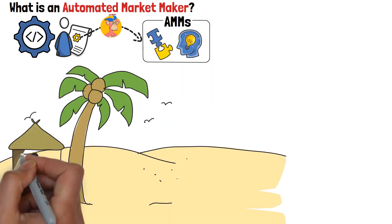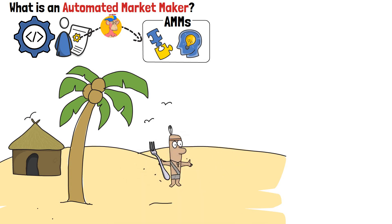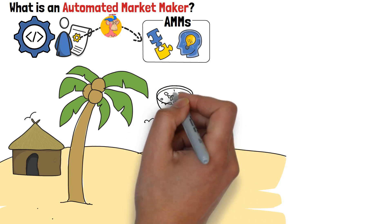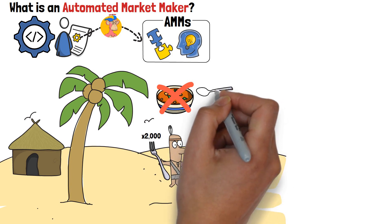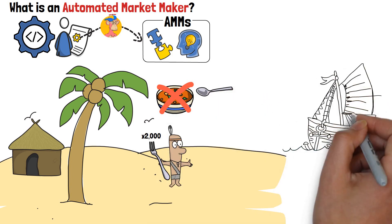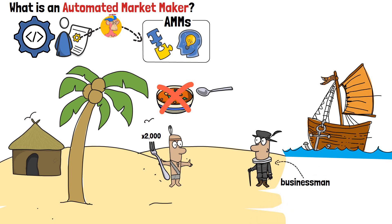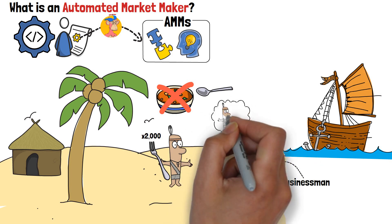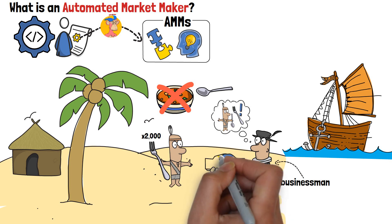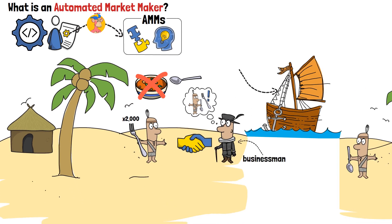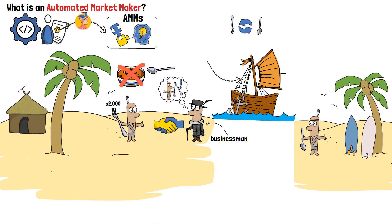Imagine that you live in a village, on an island, where everyone only uses forks and no other eating utensils. Forks are great, but eating soup with them can be really difficult. With all of the abundance of forks that you have, other utensils would be great! One day, a ship comes to visit your island. The captain tells you that he's a businessman, and that he just left another island where the residents only had spoons. The Spoon Island residents would really love to have some forks. The captain proposes a deal — his ship will travel between islands and allow people to trade spoons and forks, needing an initial supply of 1000 forks and 1000 spoons on both ends.